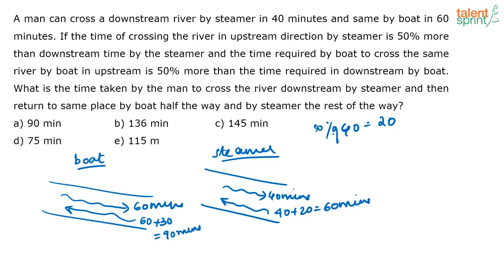Now, what is the question asking? What is the time taken by the man to cross the river downstream by the steamer and then return to the same place by the boat half the way and by the steamer for the rest of the way? So the man is going downstream by steamer — he will take 40 minutes — and when coming back, halfway he goes by boat and halfway by steamer.